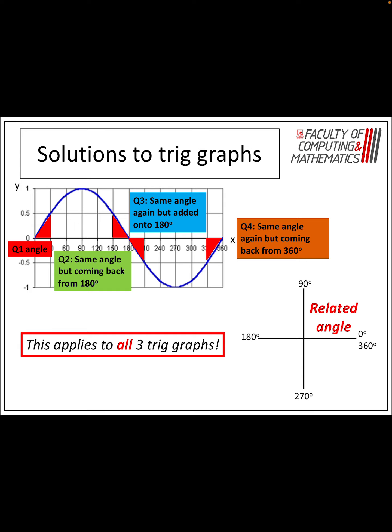For every single one, you'll get your related angle by typing it into the calculator. If you want your answer in the second quadrant, you'll do 180 minus that related angle. If you want one in the third quadrant, when tan is positive, you'll do 180 plus your related angle. And for the last quadrant, you'll do 360 minus your related angle — it's all to do with the symmetry of the graph.